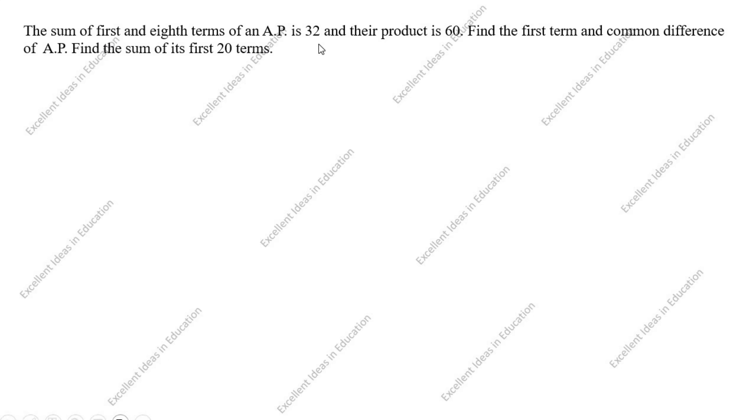Hi students, welcome to my channel, Excellent Ideas in Education. Today we are going to solve this arithmetic progression problem. This is a board exam problem. The sum of the first and eighth term of an AP is 32 and the product is 60. Find the first term and common difference of the AP, and find the sum of its first 20 terms.